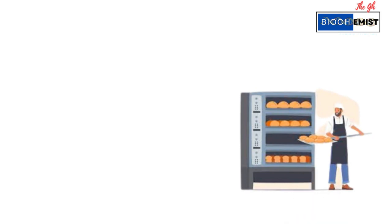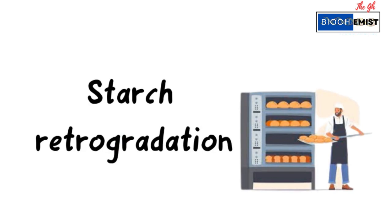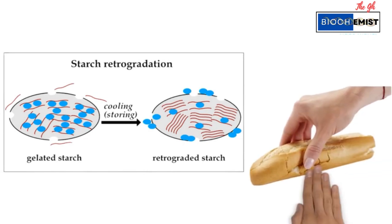When our bread is taken out of the oven and allowed to cool, it undergoes another process known as starch retrogradation. This reorganizes the starch molecules, making the bread more firm and helping it maintain its structure. It is also responsible for the hardness of bread when left over a period of time.